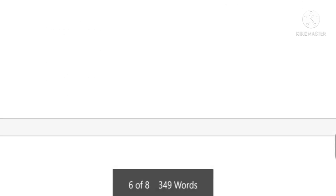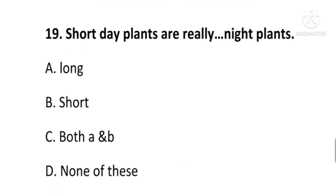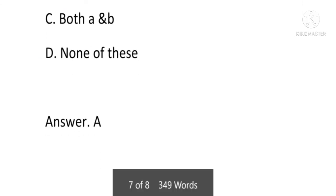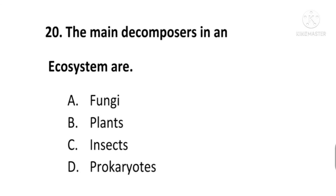Next question: short day plants are really — long night plants, long short plants, or none of these? The answer is A — short day plants are actually long night plants. Next question: the main decomposers in an ecosystem are — fungi, plants, insects, or prokaryotes? The answer is A, fungi. The main decomposers in an ecosystem are fungi.